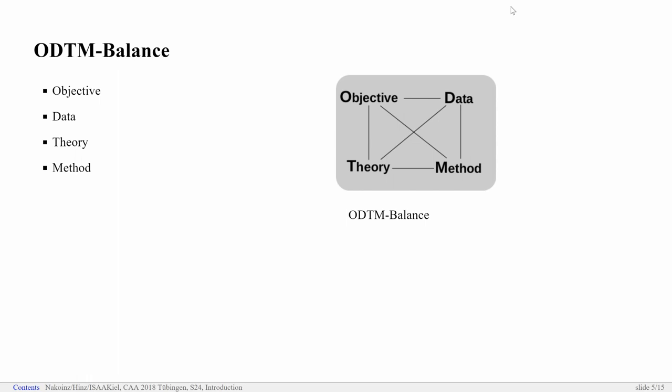And here's what we really need, a balance of objectives, of data, of theory, and methods. If we pick out just one thing, as for example in traditional statistics, we pick out just a method, then this will never work. We don't have a proper connection to the other pillars of research. And the same if we focus just on theory or something else. It never will work because we need the tight integration of these four pillars of research.